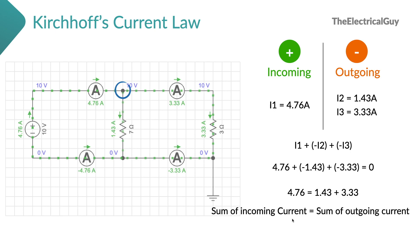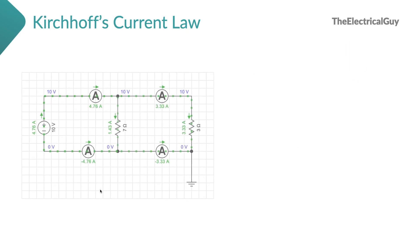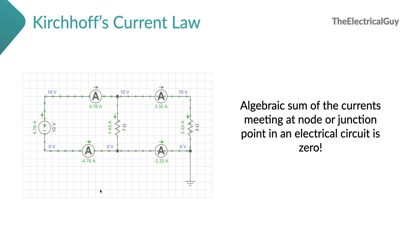This proves that the sum of incoming current is equal to the sum of outgoing current. It is really easy and it makes sense. Just look at the circuit: the total incoming current towards this node is 4.76 ampere, and from that node there are two currents that are splitting — 3.33 ampere and 1.43 ampere — and if you add them you get 4.76. And that means the sum of incoming current to this node is equal to the sum of outgoing current. Congrats, because you have understood Kirchhoff's Current Law. Now let's look at the official statement: Kirchhoff's Current Law states that the algebraic sum of the currents meeting at a node or junction point in an electrical circuit is zero.